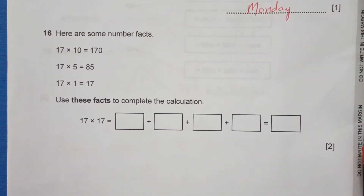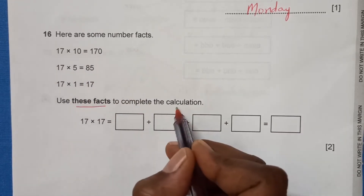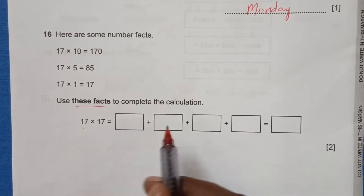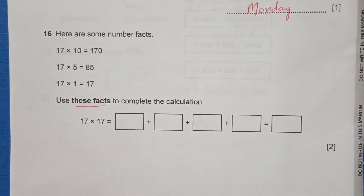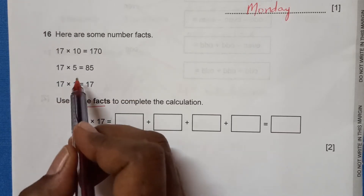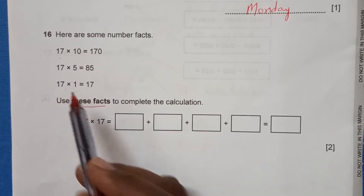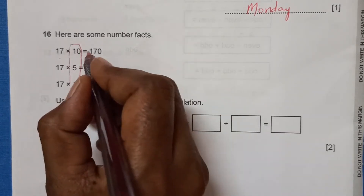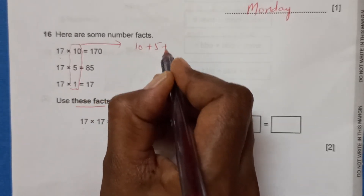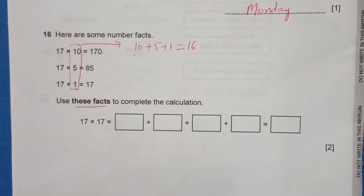Question 16: here are some number facts. We need to use these facts to complete the calculation for 17 times 17. The given facts are: 17 times 10, 17 times 5, and 17 times 1. Adding those multipliers: 10 plus 5 plus 1 equals 16. But we need 17 times 17, so we need one more group.